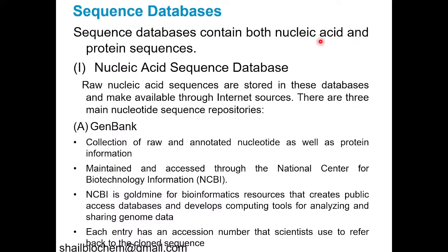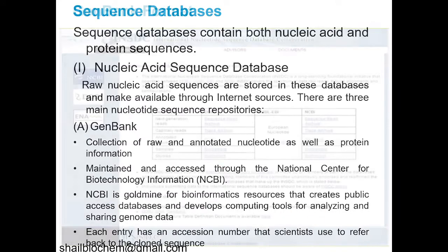Sequence databases contain both nucleic acid and protein sequences. For nucleic acid sequences — DNA — the research data is stored in nucleic acid sequence databases such as GenBank, which is a collection of raw annotated nucleotides as well as protein information. GenBank is maintained and accessed through NCBI, which is a gold mine for bioinformatics. Here you can get a lot of data with public access, and you can develop new computer tools as per your requirements.